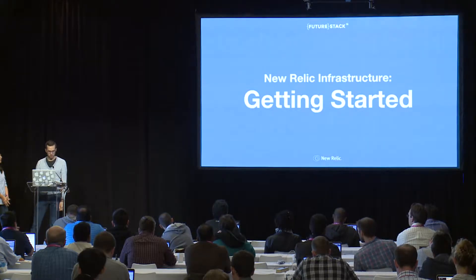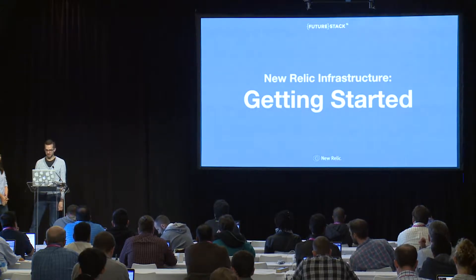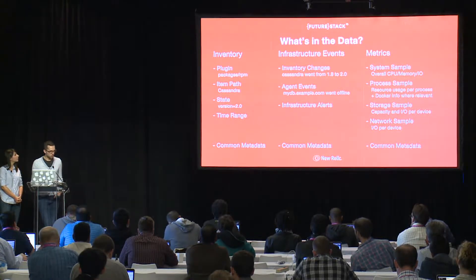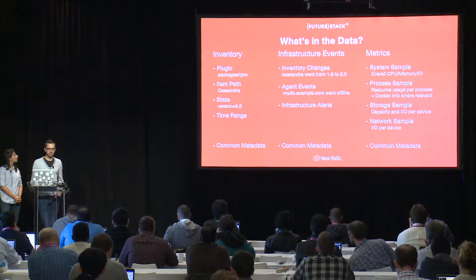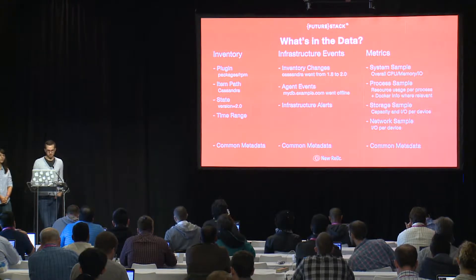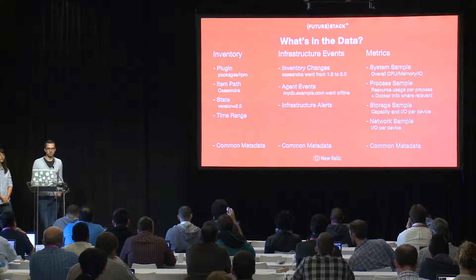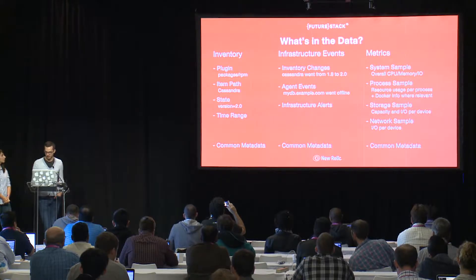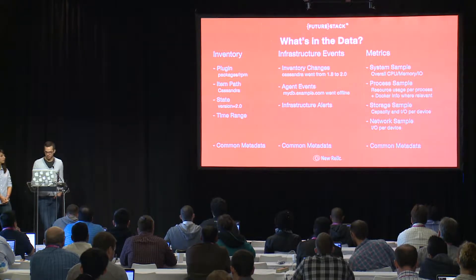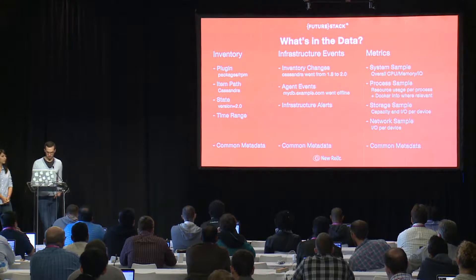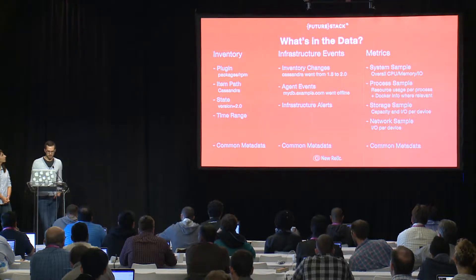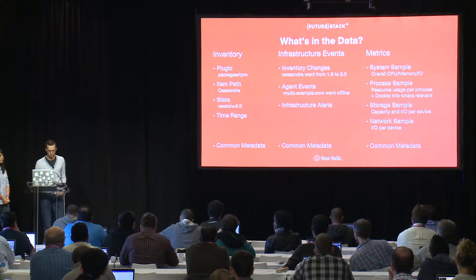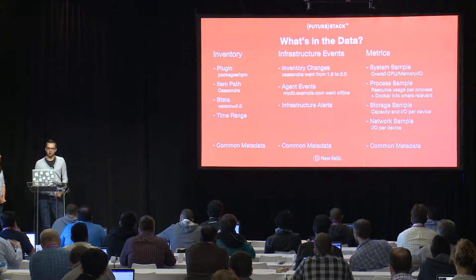Before we jump into the UI, I want to talk about the data we gather and where it comes from. It is based on an agent — you install the agent and it starts reporting metrics. It's a quick install: all you have to do is add a config file that has your license key, then install a standard Linux or Windows package. There's optional configuration you can do on top of that, but that's the basics. Once you've done that, you start getting this information. The first category is inventory — the current state of your host.